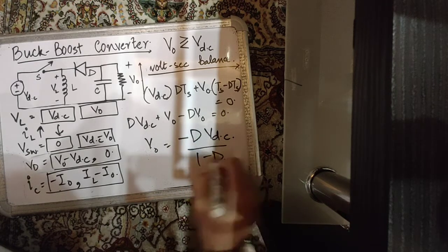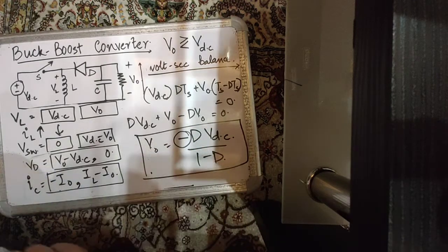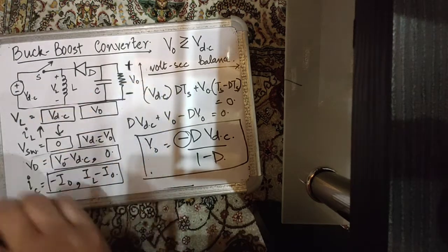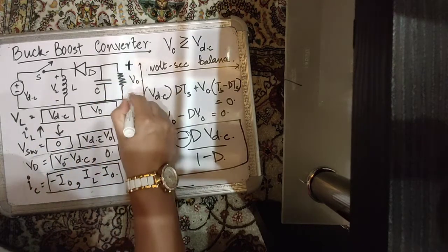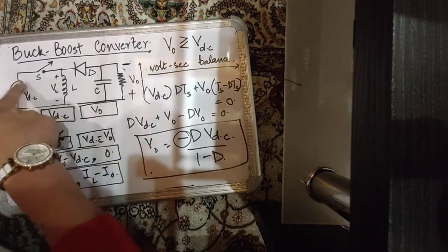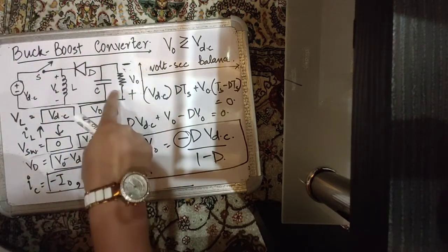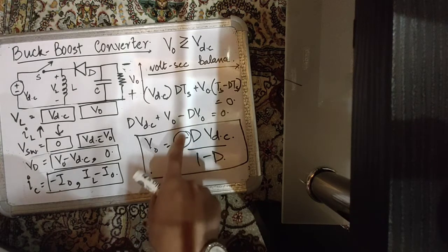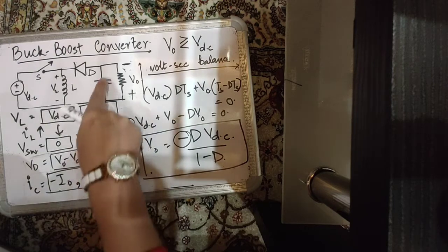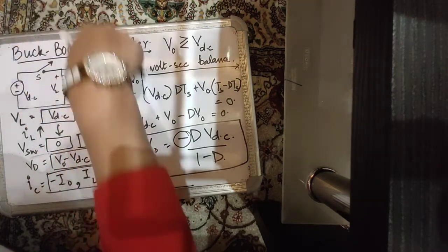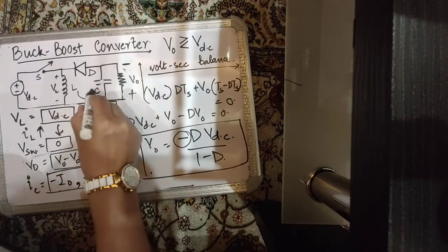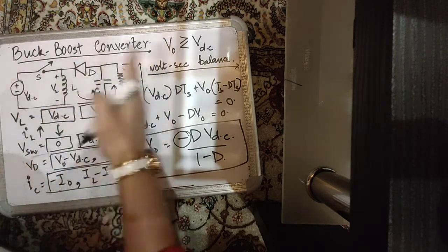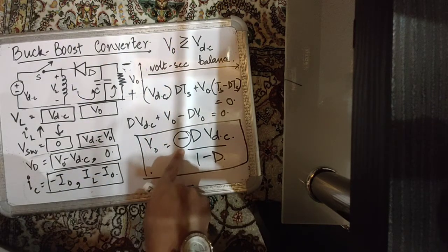The minus sign physically confirms that when the inductor releases energy it dumps it into the capacitor in the reverse direction, feeding the load in the reverse direction and forward-biasing the diode. The direction of currents is reversed on the right-hand side of the circuit — this is both physically intuitive and mathematically confirmed by the negative sign in the volt-second balance result.